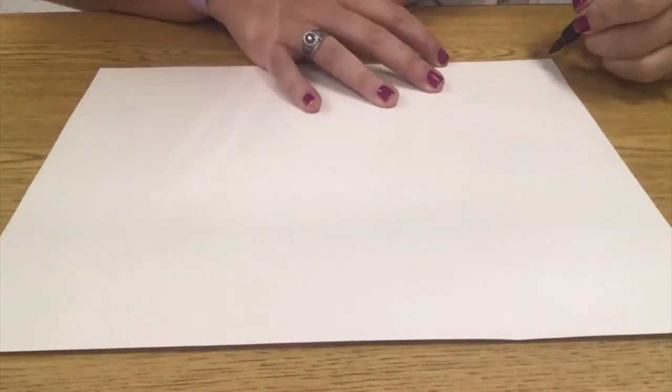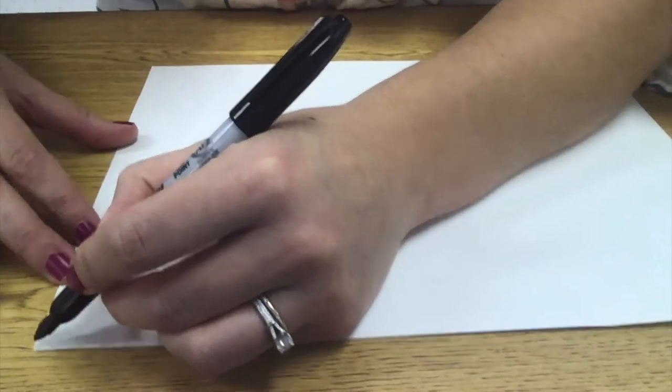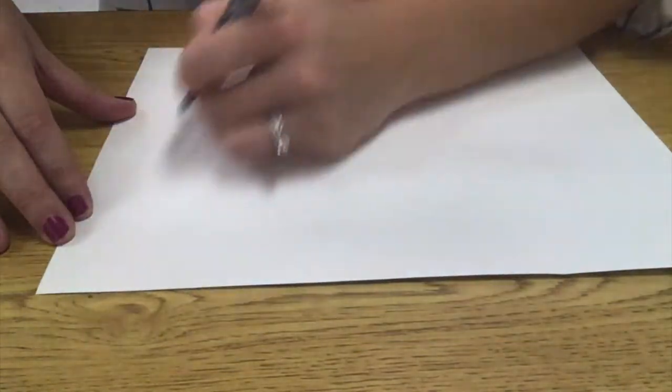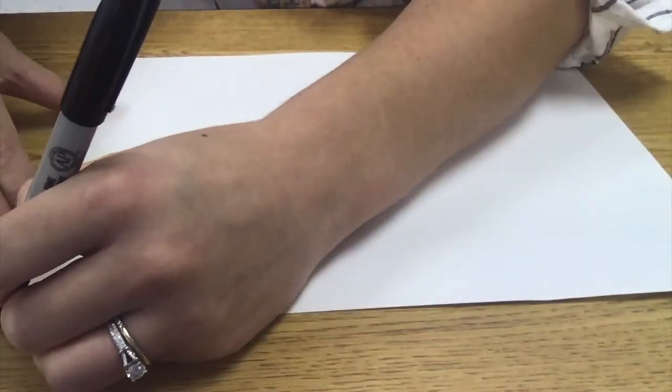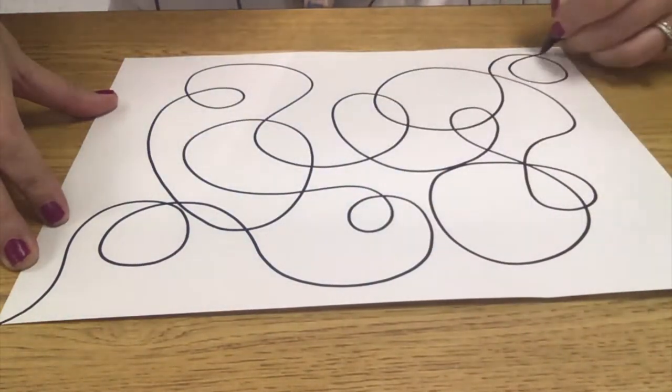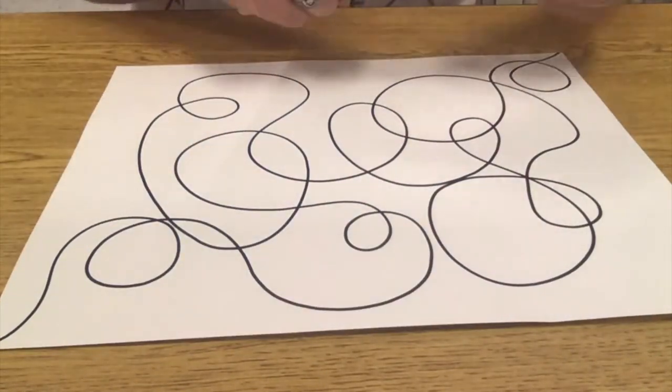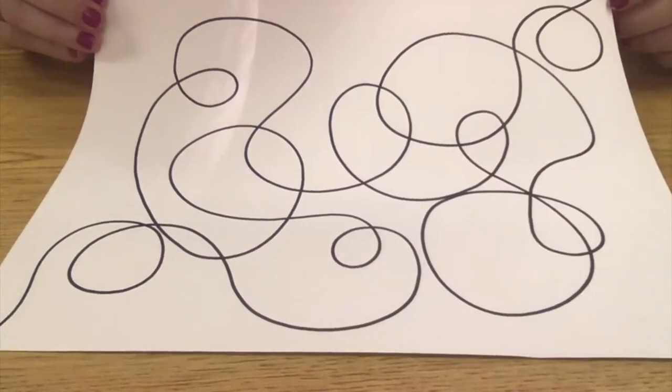I want you to start at one corner of your paper and go all the way across to the other corner. Okay? Here we go. So I went all the way across. You can see I've made myself some spaces here.